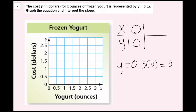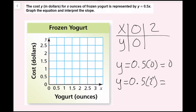Now I just need to figure out the next point on this line. I'm going to pick x equals 2, because I have a decimal and I know if I multiply 0.5 times 2, it'll cancel that decimal. You could have done 1, or any number on the graph. So y equals 0.5 times 2. Well, 0.5 is the same as one-half, and half of 2 is 1.